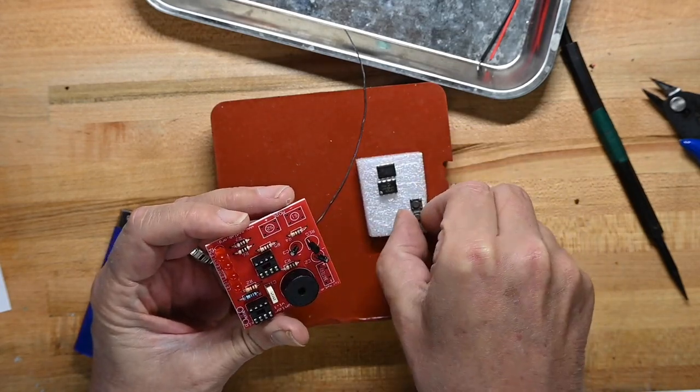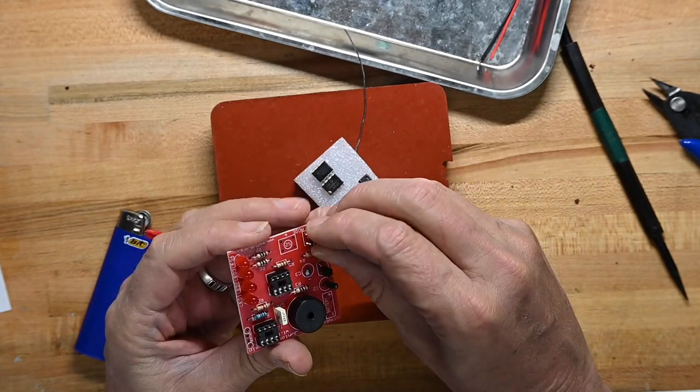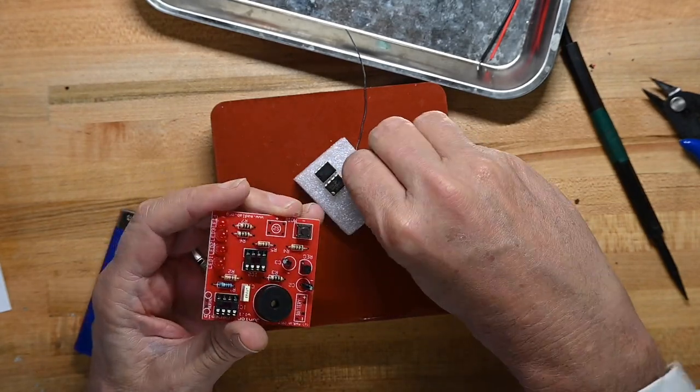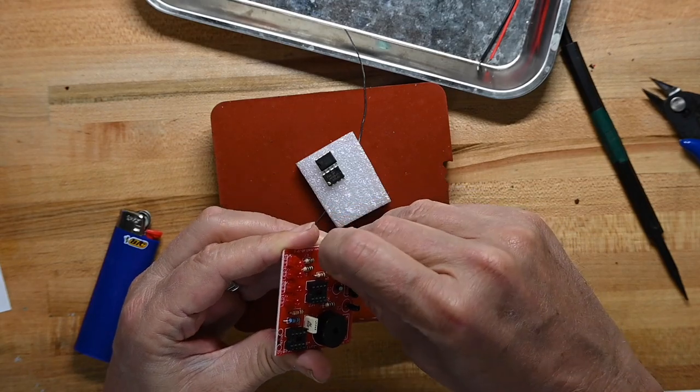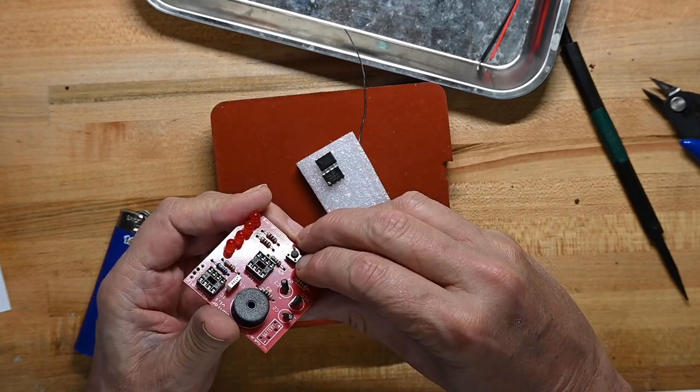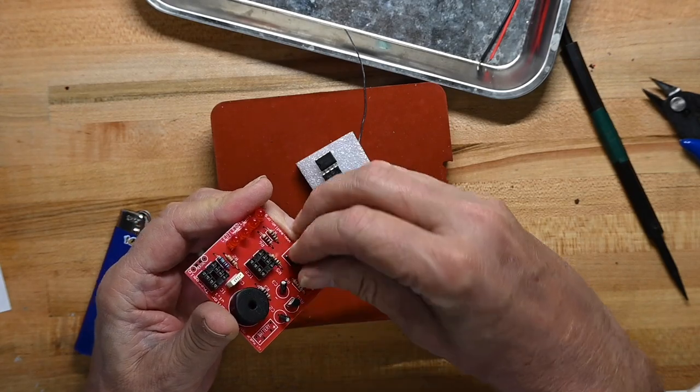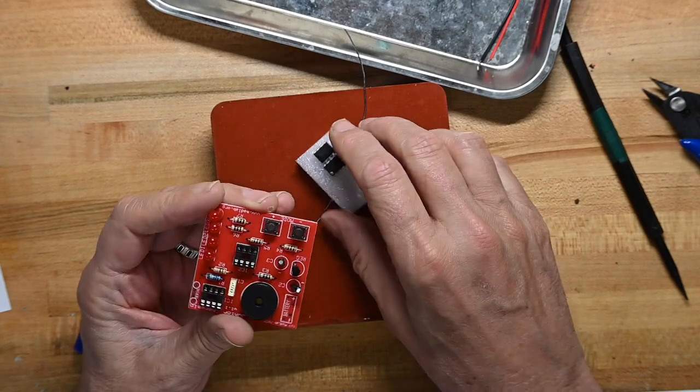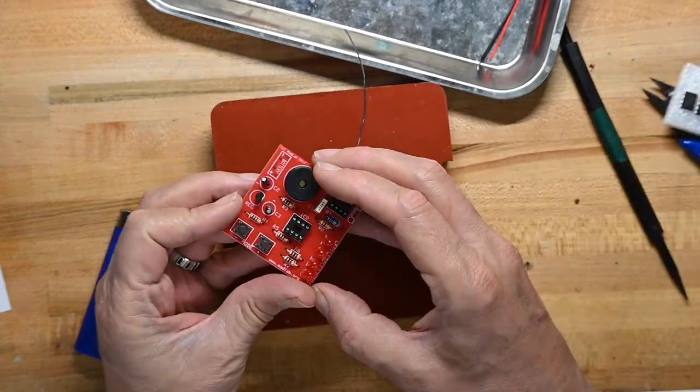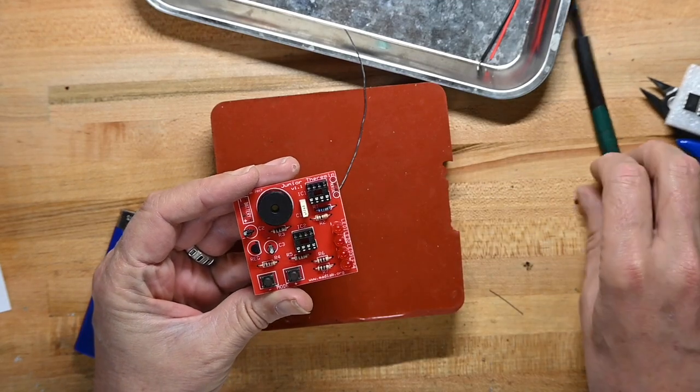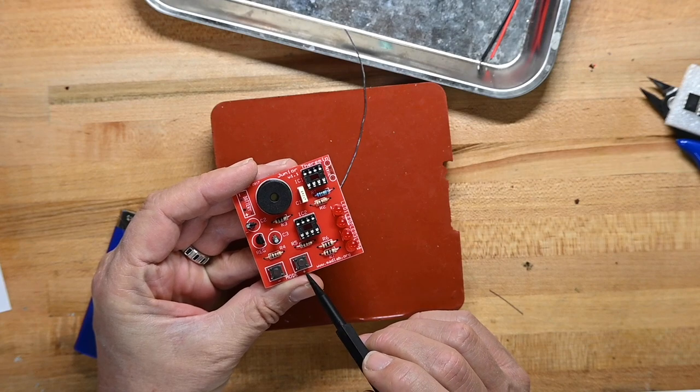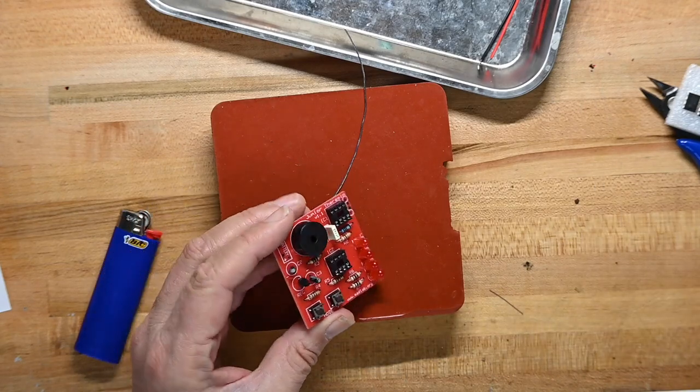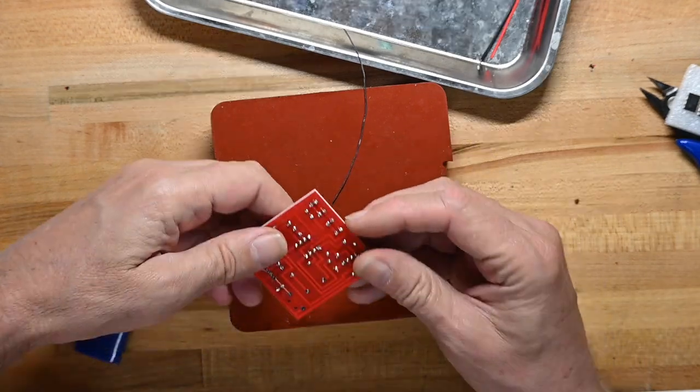And I'm going to put the two tactile switches in. They're rectangular not square. So it's easy to know how to orient them. It's difficult to put them in wrong. You can put them in wrong of course. Humans are wonderful at doing the wrong thing if they're persistent enough. But it's pretty straightforward. Now this is interesting. These switches say mode plus and minus. I think they may mean volume for that. But I don't know. We'll see when we get it working.